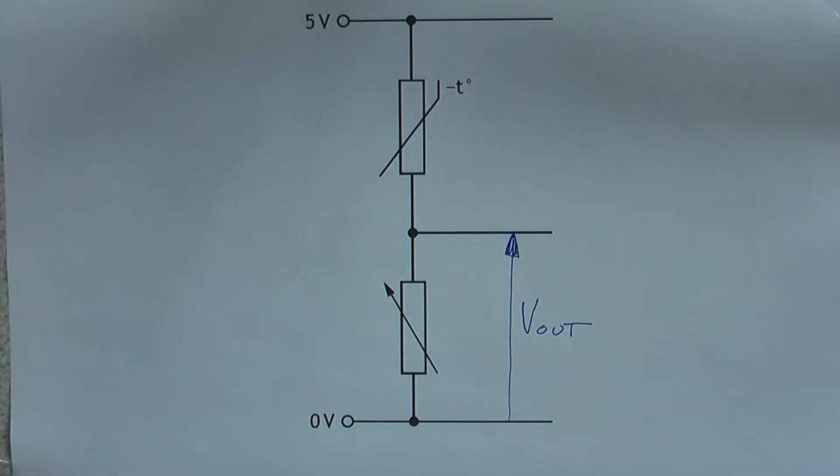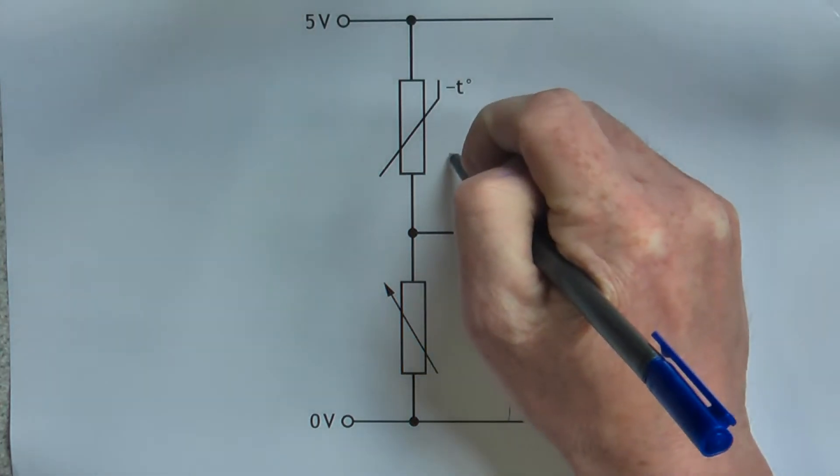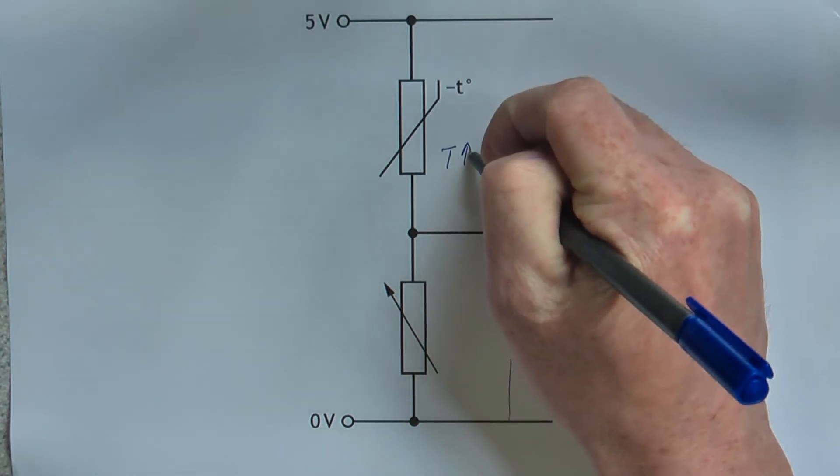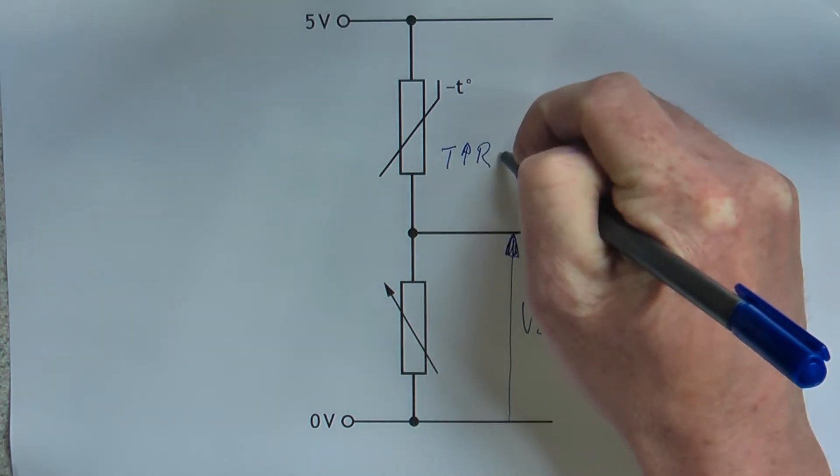Here we have a voltage divider or potential divider. It's made up of a voltage supply, a variable resistor, and a thermistor. The resistance of the thermistor changes with temperature. As the temperature goes up, the resistance of the thermistor goes down.